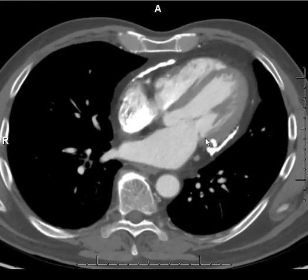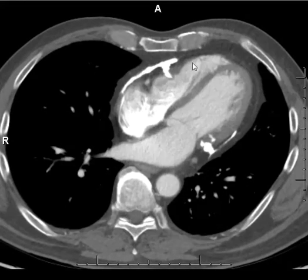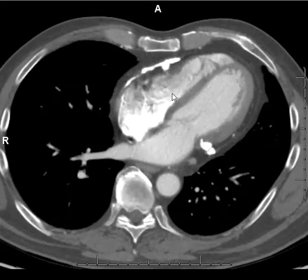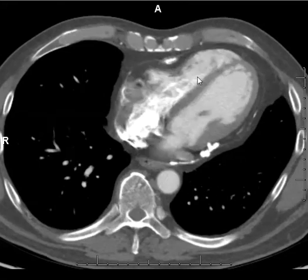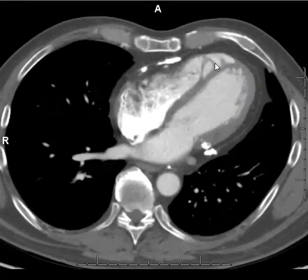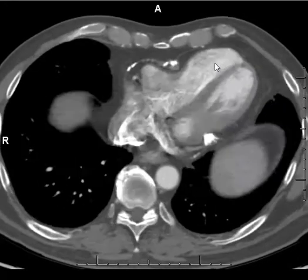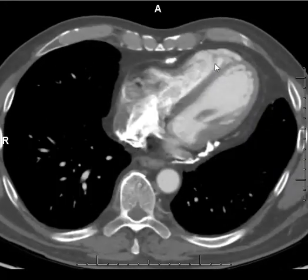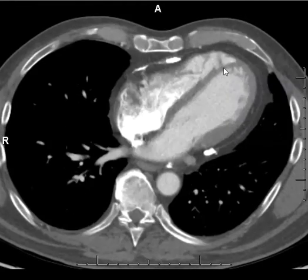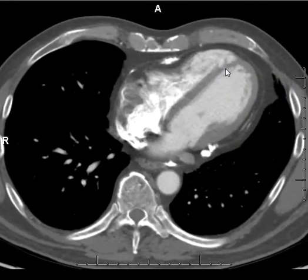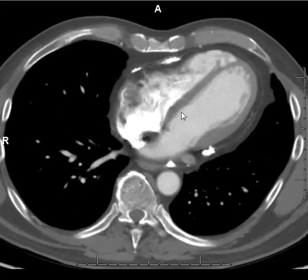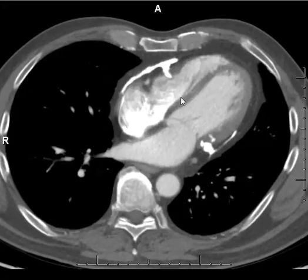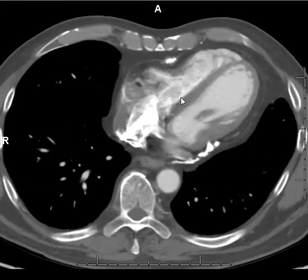The other signs of constrictive pericarditis in this patient are the tubular appearing right ventricle. You can also see that the intraventricular septum is flattened, which is another sign of constrictive pericarditis.